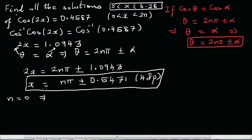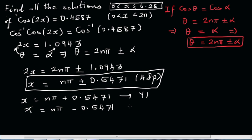This means this has got two answers here. So x equals nπ plus 0.5471, that's one possible answer in y1. And x equals nπ minus 0.5471, this is in y2.